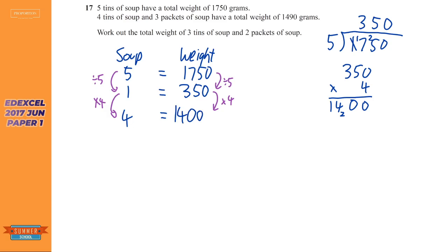And just check that makes sense. Well, five tins of soup is 1,750. So four tins of soup, yeah, that looks about right, 1,400. So we've got the soup sorted, this bit here. It says it has a total weight of that. So what we can do is just take that away. And we probably don't need to show the working out for this, but we're going to do it anyway. So take away 1,400, obviously equal to 90.